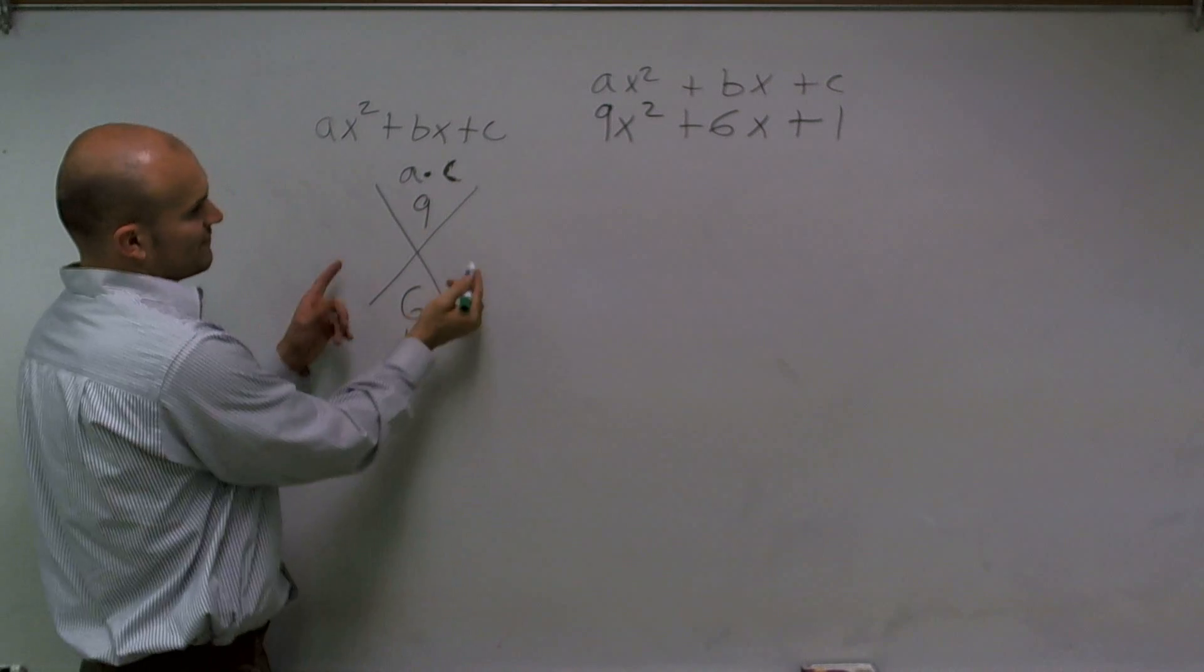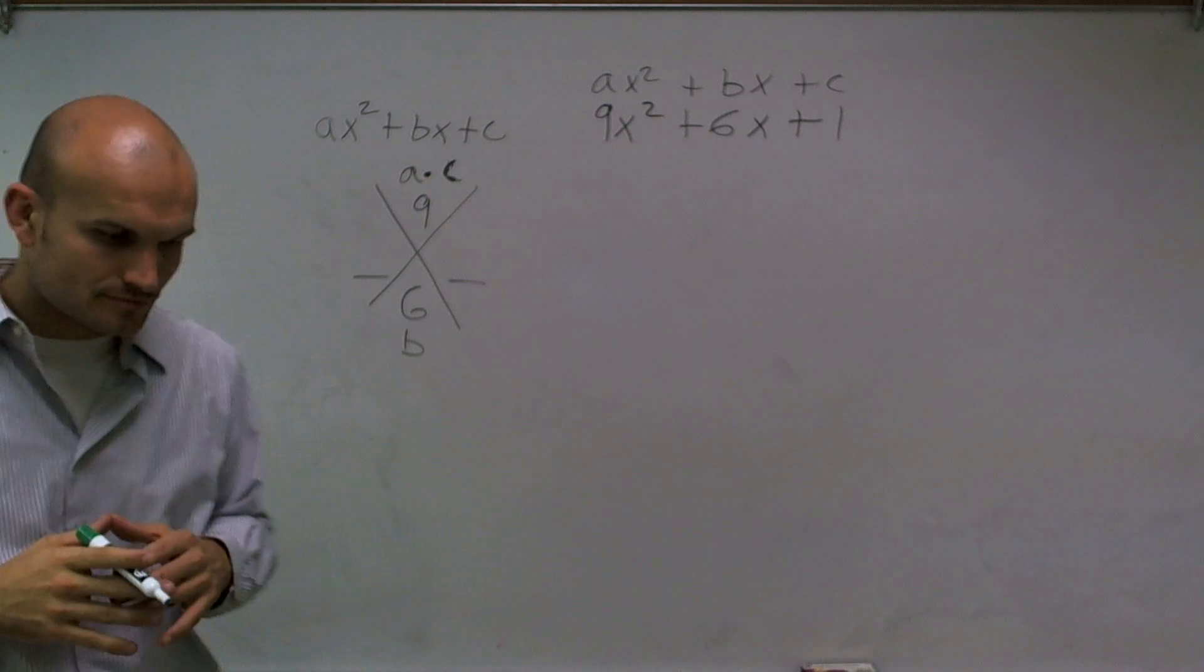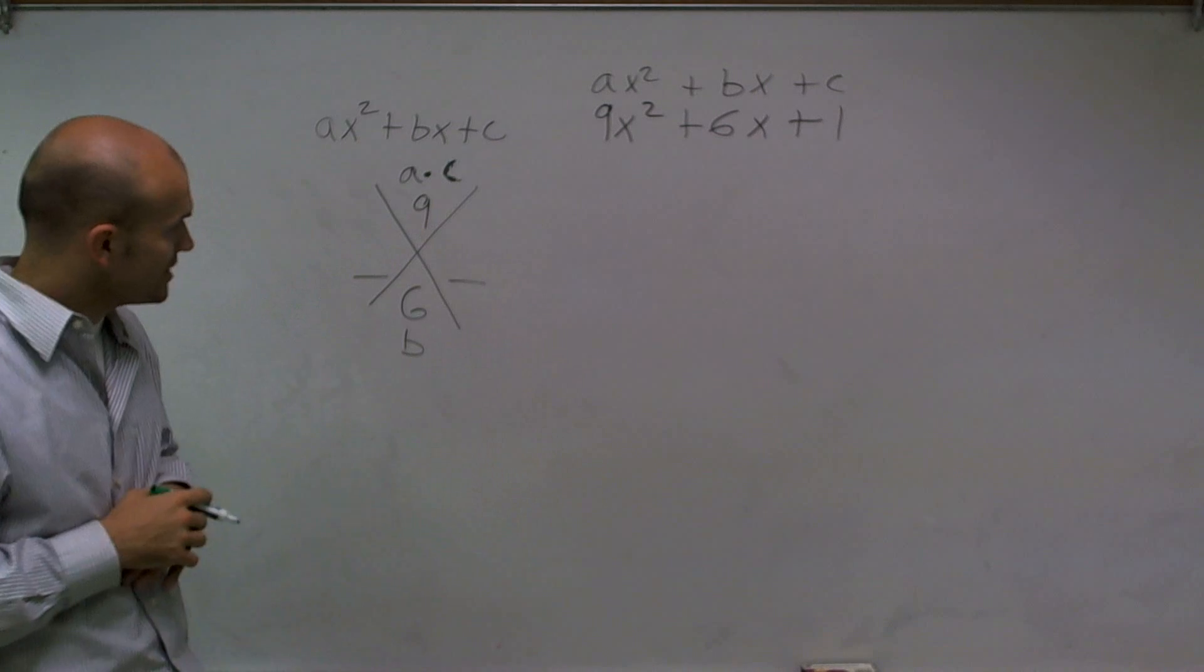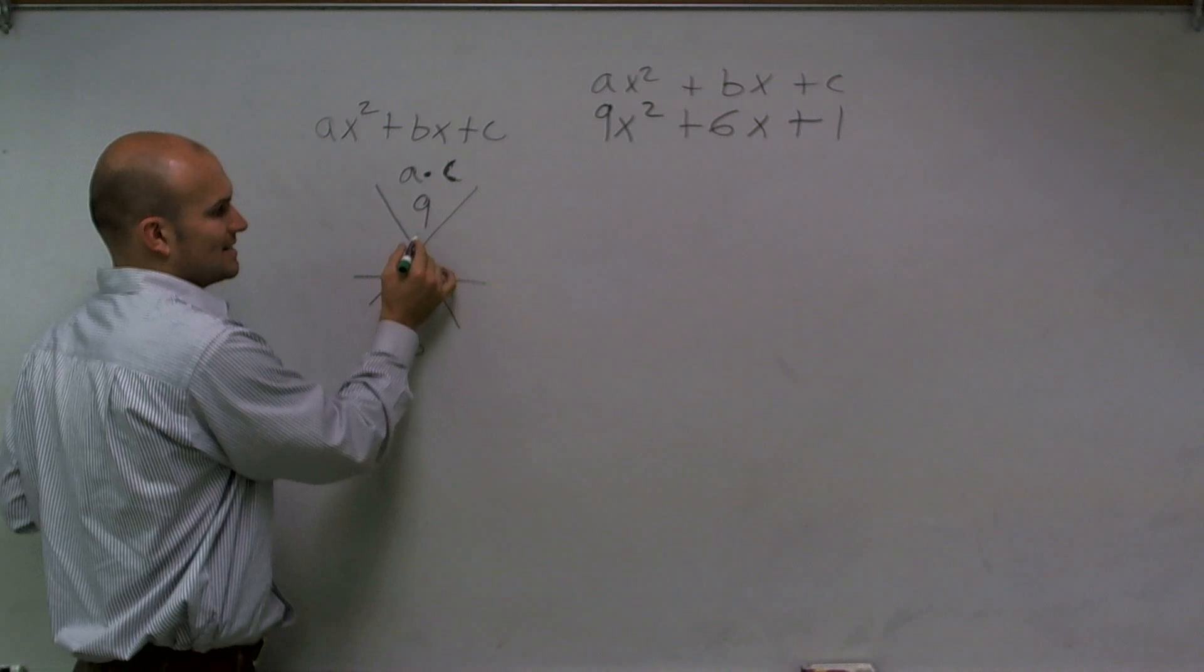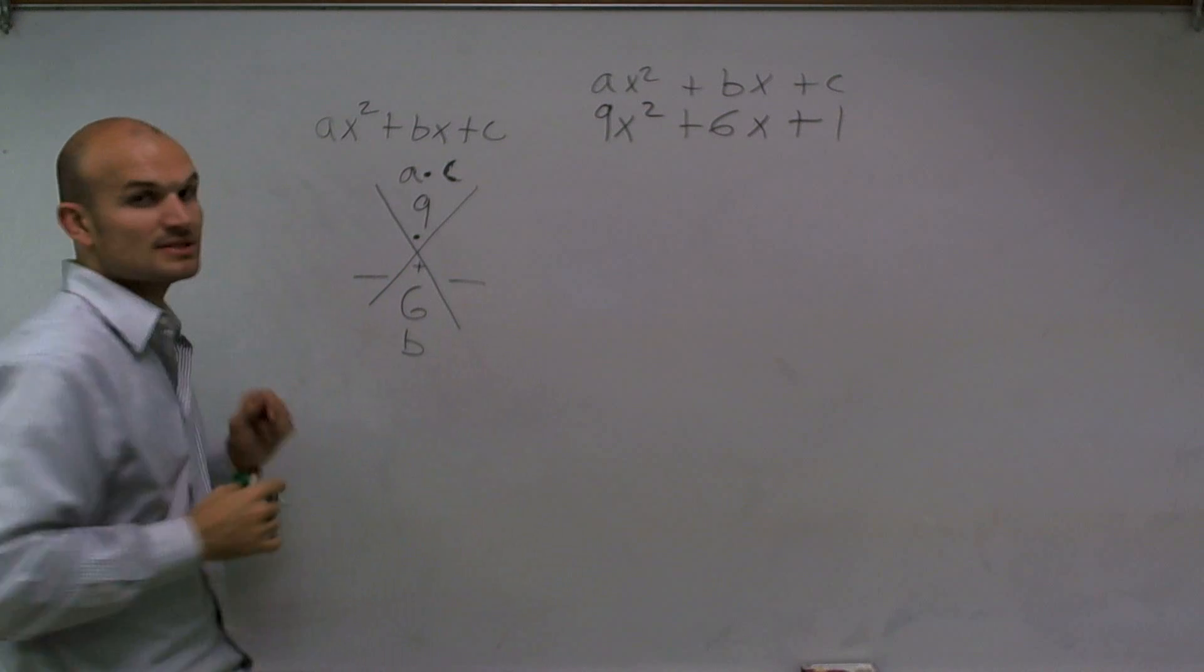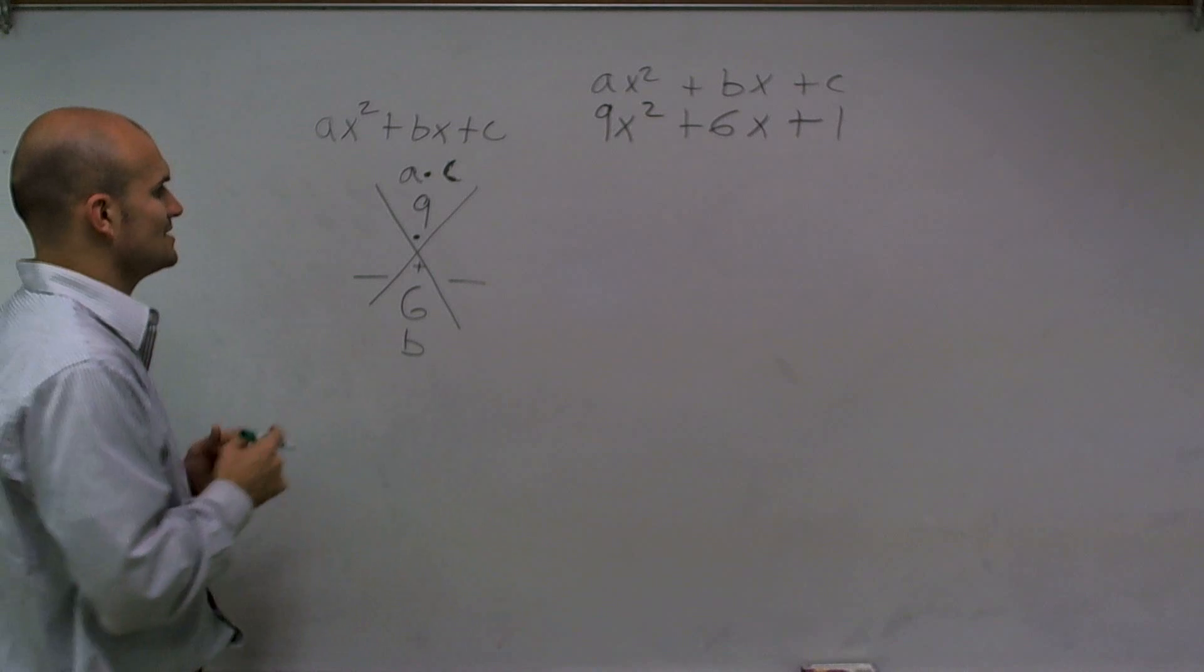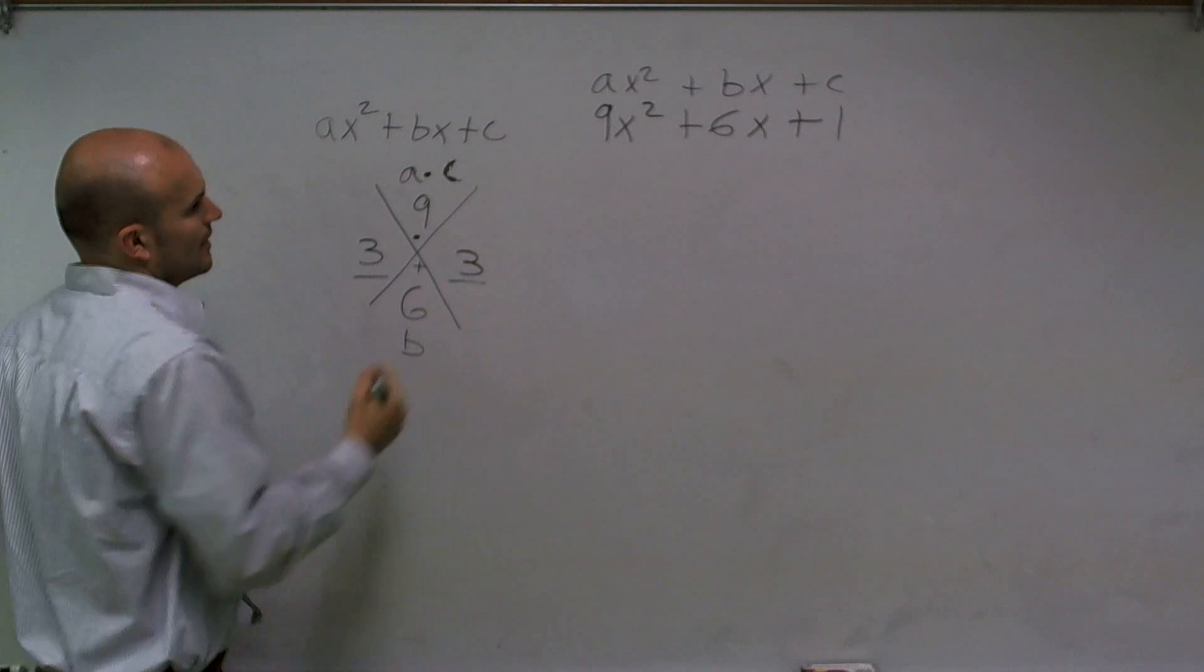Now, what I want to do to find these two areas of my diamond, or this little box, is I need to say what two numbers multiply to give me 9, so what factors multiply to give me 9 but add up to give me 6. And you can obviously see that your two answers are going to be 3 and 3.